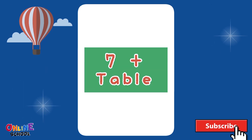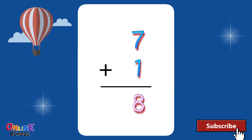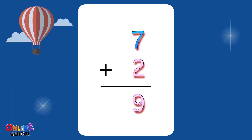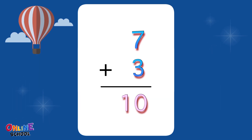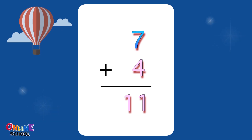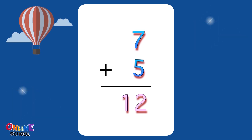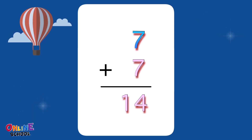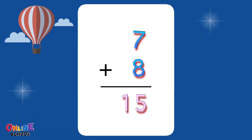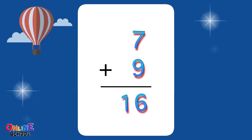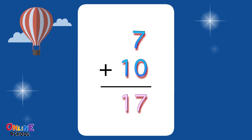Table 7: 7 plus 1 equals 8, 7 plus 2 equals 9, 7 plus 3 equals 10, 7 plus 4 equals 11, 7 plus 5 equals 12, 7 plus 6 equals 13, 7 plus 7 equals 14, 7 plus 8 equals 15, 7 plus 9 equals 16, 7 plus 10 equals 17.